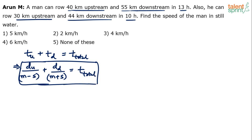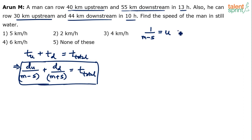To make it simpler, let's substitute: let 1/(m − s) = u, that is the reciprocal of upstream speed equals u, and 1/(m + s) = d, the reciprocal of downstream speed equals d.